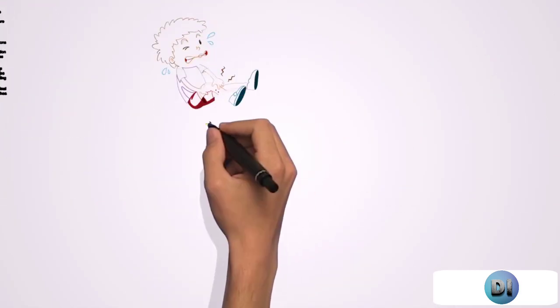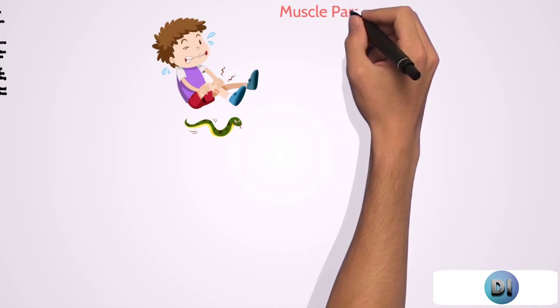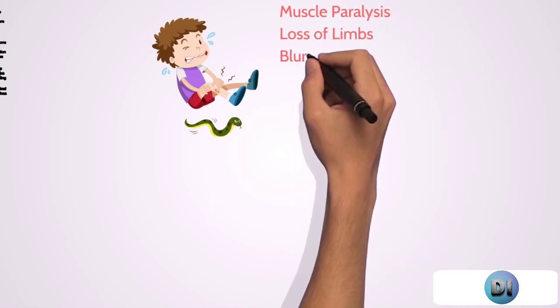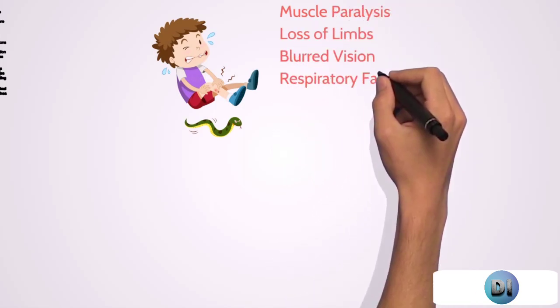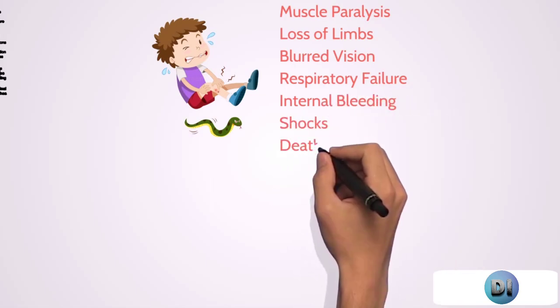However, the most dangerous venomous snakebites can cause serious muscle paralysis, loss of limb or fingers, blurred vision, respiratory failure, internal bleeding, shocks, and if not treated, death.